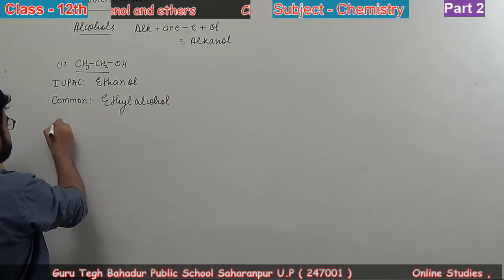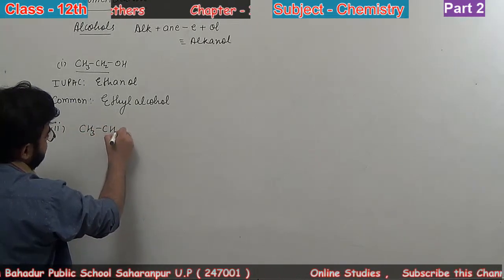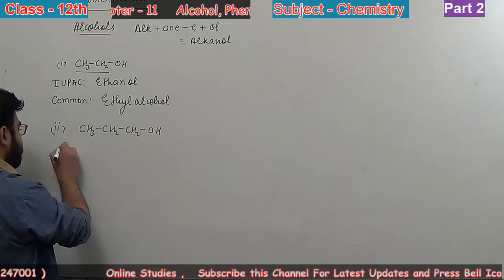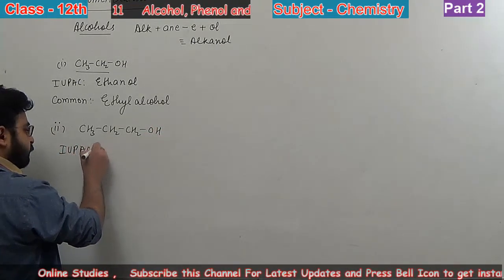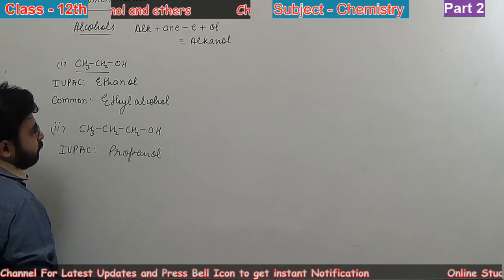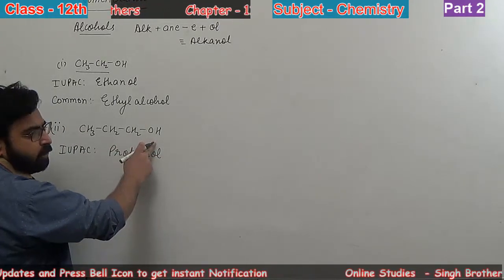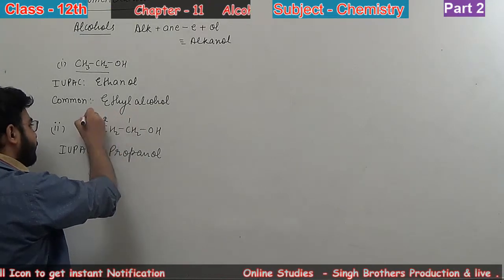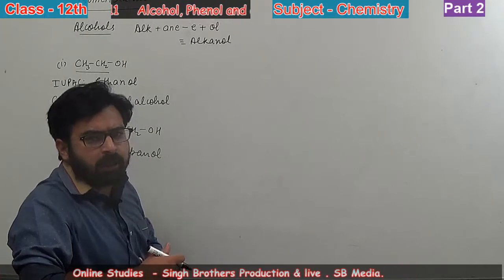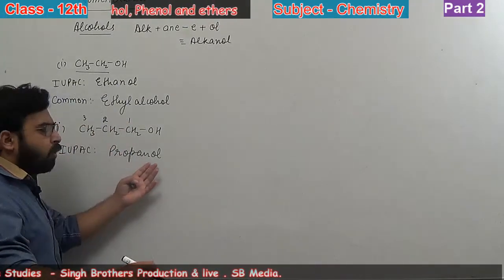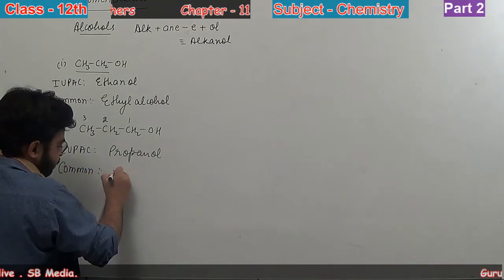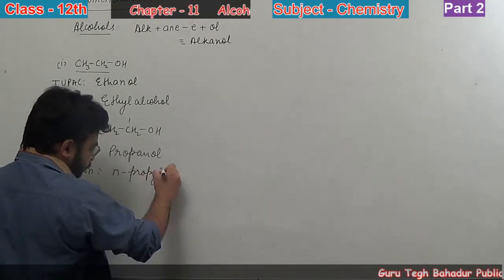Second molecule is CH3-CH2-CH2-OH. There are three carbons in the chain, so its IUPAC name is propanol. We indicate the position of the functional group, but since OH is at position one, we simply write 'ol' - writing 'one' is not necessary. Common name is n-propyl alcohol.